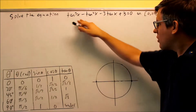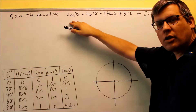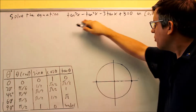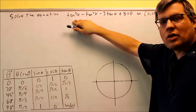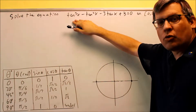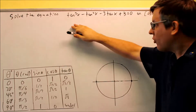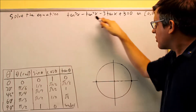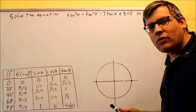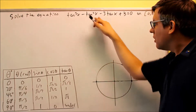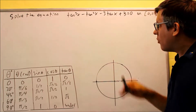We haven't looked at one like this yet. This one has four terms in it. So if you have one that has four terms, then the procedure that you want to use is factoring by grouping. It may not work all the time, but for ones like this in this section, most likely if they give you four terms, you're probably going to have to use a grouping method in order to factor that one.